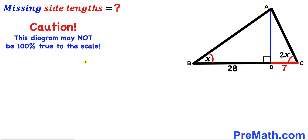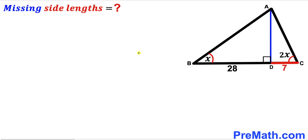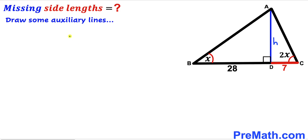Please keep in mind that this figure may not be 100% true to scale. Let's get started. I'm going to label this perpendicular AD as our height, lowercase h. And now we are going to draw some auxiliary lines to make our job simpler, as you can see in the next step.